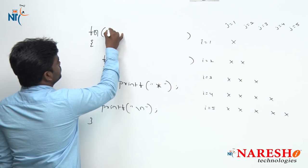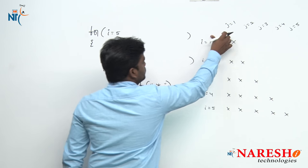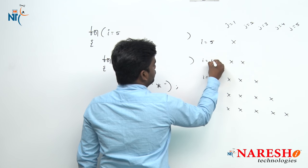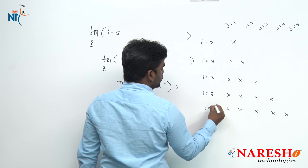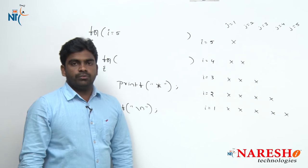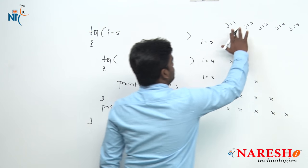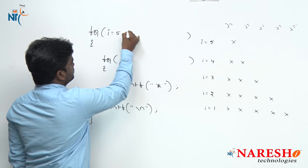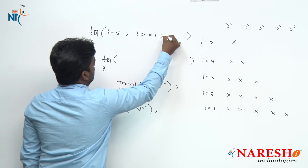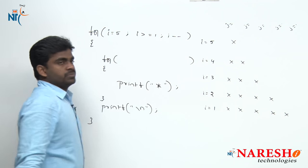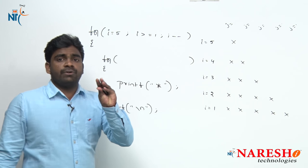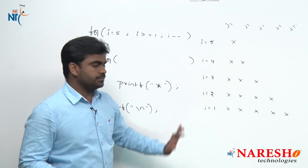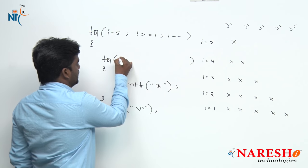Now i value starts with 5. Values are also changing — starts with 5, 4, 3, 2, 1. What are the j values? That we need to find out. i equals to 5, i is greater than or equals to 1, i minus minus. How many times will it repeat? 5 times, in decreasing order: 5, 4, 3, 2, 1. Now for the inner loop j value — what is the initialization, what is the condition?